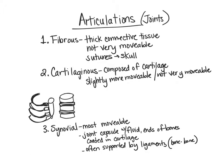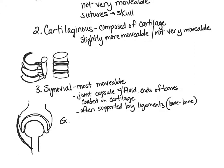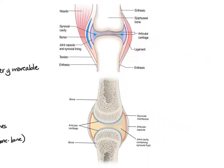Examples of synovial joints include the shoulder, which is a ball-and-socket joint that's freely movable. We have the ball fitting into the socket with a capsule in between and ligaments connecting the bones. Other examples are the elbow, knee, hip, and also the jaw joint, which moves more freely than the fibrous joints of the rest of the skull.